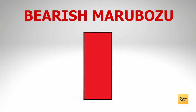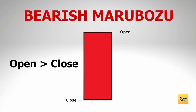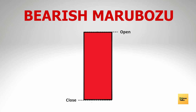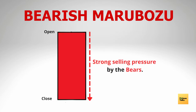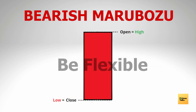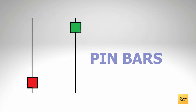Moving on to bearish Marubozu, which is similar to the bullish Marubozu but is the strongest bearish pattern. For a bearish candle, the open price is higher than the closing price because the sellers are willing to sell at all available prices. A bearish Marubozu indicates so much selling pressure that participants sold at every price point during the day, so much so that the stock closed near the low of the day. The high and open prices coincide while the low and closing prices coincide. The candle has a big real body with no wicks, indicating strong selling and a complete lack of buying pressure from the bulls.